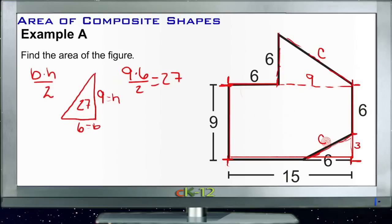And then our rectangle down here on the bottom, that's easy. That's just 9 times 15. So the area of the rectangle is base times height. Here's our height, here's our base. So we have 9 times 15. 9 times 10 is 90, half of that's 45, so we have 135.